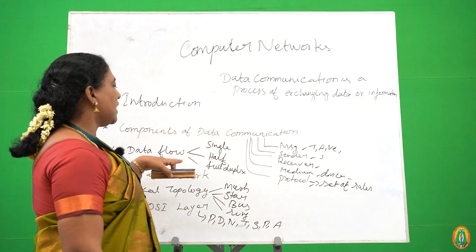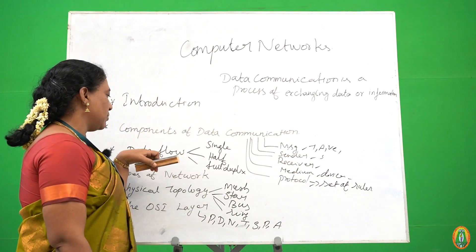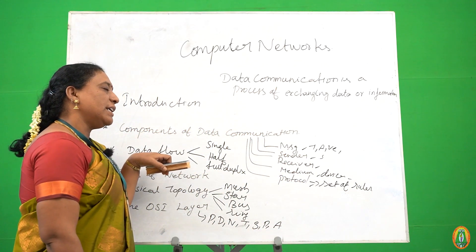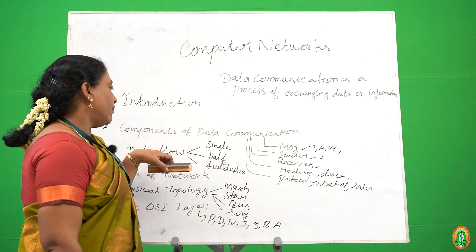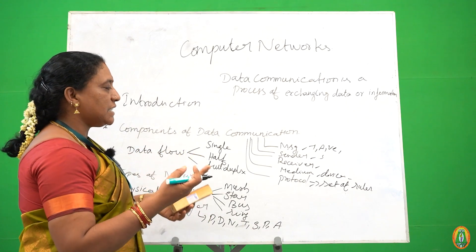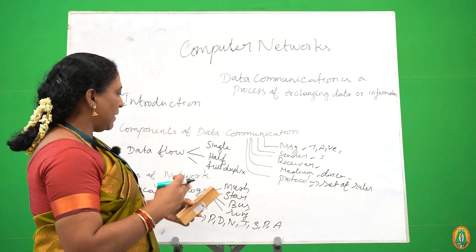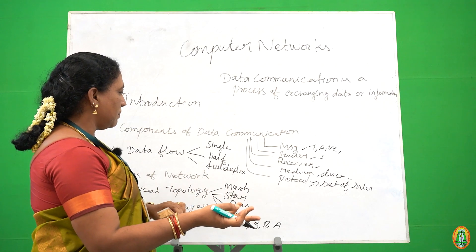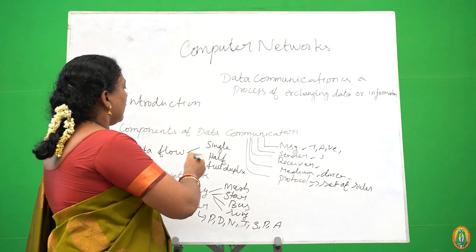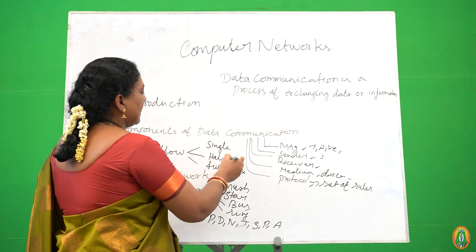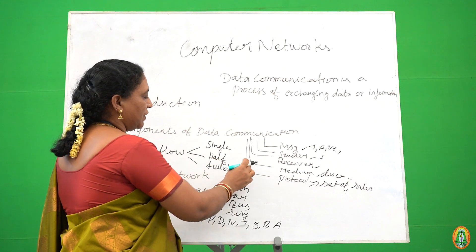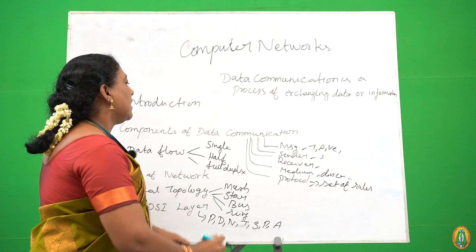Next we are going to discuss about data flow. What do you mean by flow? Flow is nothing but information moving from one place to another place without any delay. We have three types: simplex, half duplex, and full duplex.